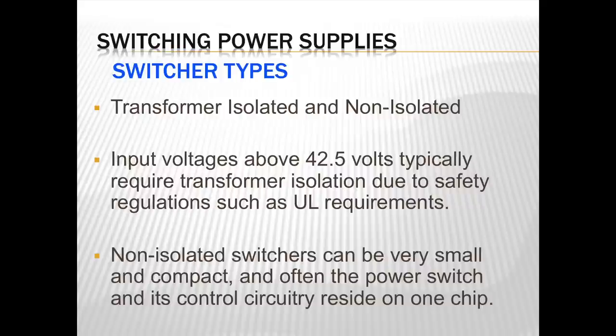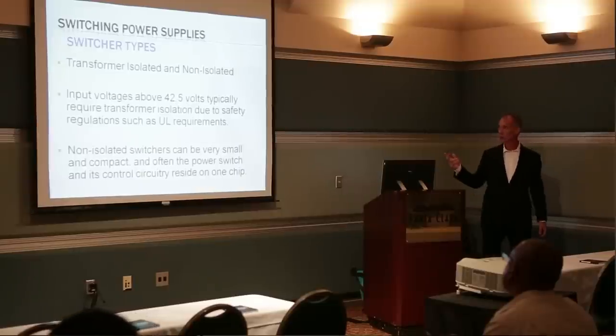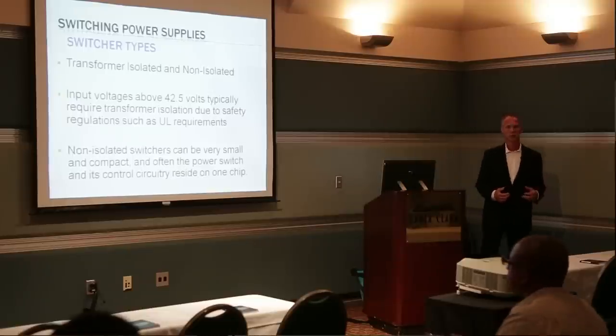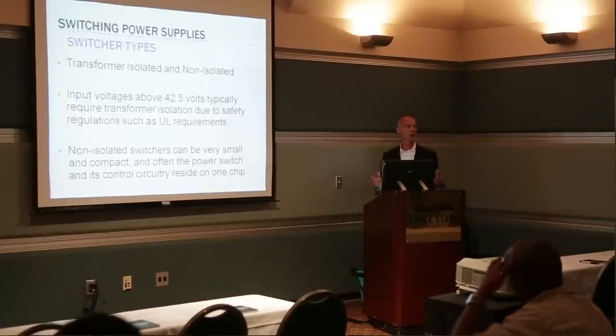There are two main types of switching power supplies: isolated and non-isolated. Isolated types have a transformer in the middle of the switching power supply. Typically you need a transformer-isolated switching power supply when voltages are higher — above 42.5 volts is a pretty much worldwide standard, required for safety. For lower voltages, the power components can be on the same chip as the control circuitry, which is why we find modules with very few external components.